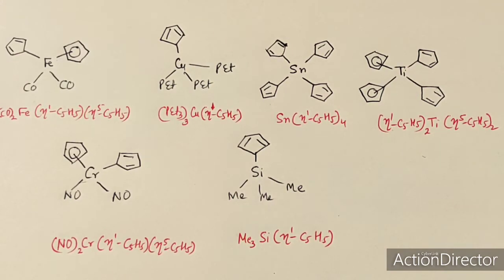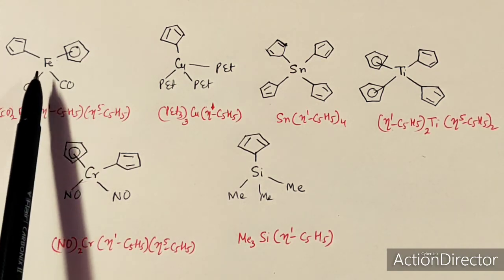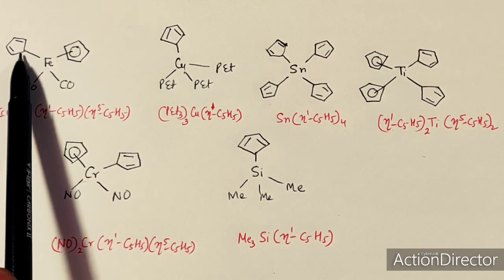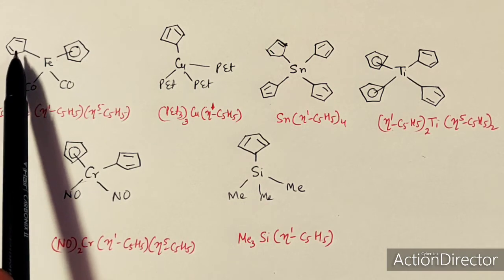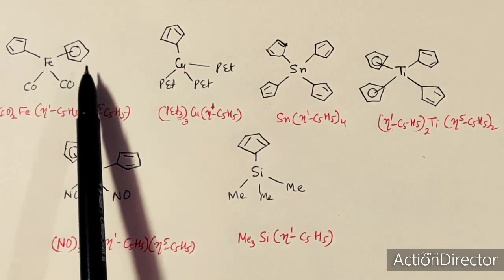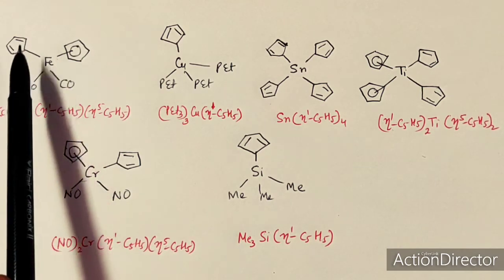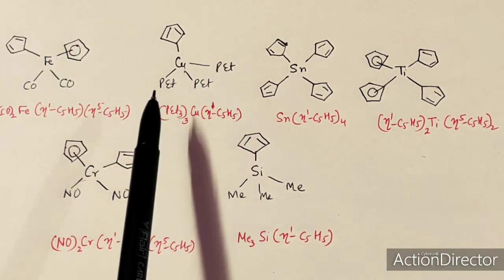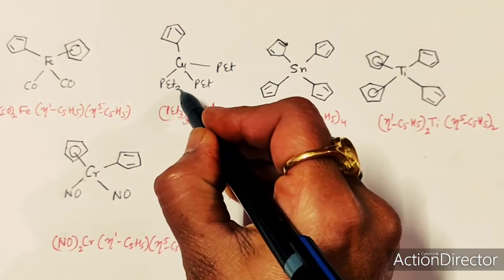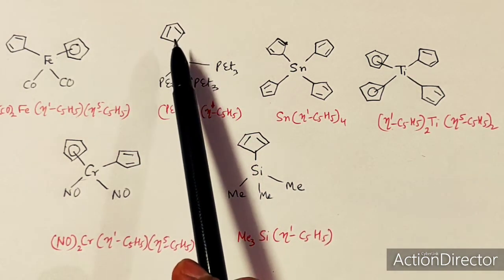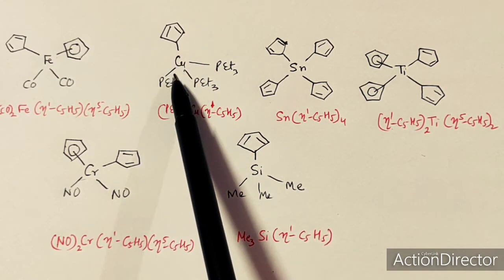These are examples of cyclopentadienyl complexes that show fluxional behavior. In one iron complex, one cyclopentadienyl ring is η5-type, joined through all five carbon atoms, and the other is η1-type, joined through only one carbon atom forming a sigma bond. There is also a copper complex with three triethylphosphine ligands and one η1-cyclopentadienyl ring joined through one carbon atom to the copper atom.